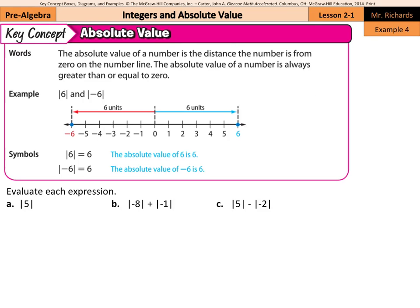One of our key concepts in this lesson is absolute value. The absolute value of a number is the distance the number is from zero on the number line. The absolute value of a number is always greater than or equal to zero. When we look at the absolute value of six — six is six spots away from zero: one, two, three, four, five, six. That's six units away.